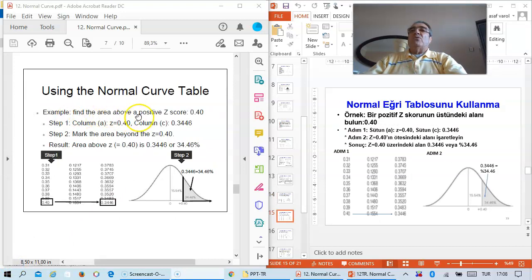Example: Find the area above a positive z-score of 0.40. Step 1: Find 0.40, but since we want the area above, we use the tail portion, so we use column C. The area above 0.40 is 0.3446, or 34.46%.